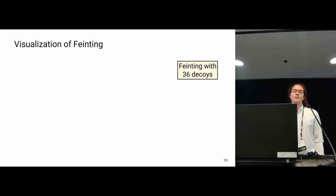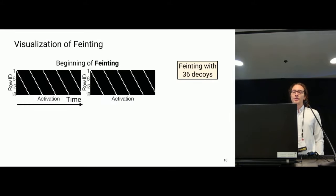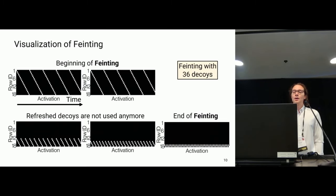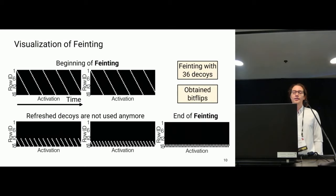Let's have a visualization of fainting — an example with 36 decoys, meaning 18 aggressors. At the beginning of fainting, all aggressors linked with the decoys are activated. But as decoys are refreshed, those aggressors are not activated anymore. Up to the end of fainting, only the aggressor linked to the real victim is still activated. We used this pattern on real devices, obtaining bit flips.